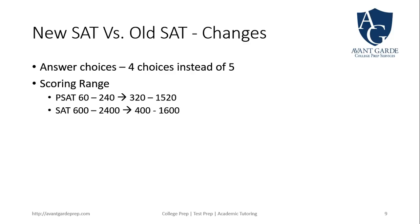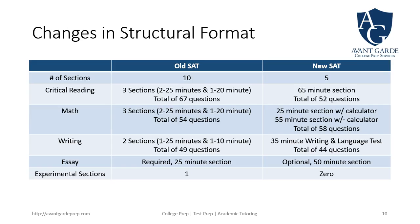Regarding scoring: the PSAT score range is 60 to 240, which is used for the National Merit Scholarship Qualifying Test. They also give a translated score for the new SAT range of 320 to 1520. The old SAT had three sections with scores ranging from 600 to 2400; that has been reduced back to the 1600 scale, ranging from 400 to 1600.